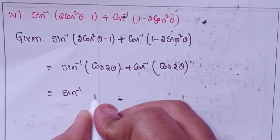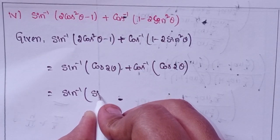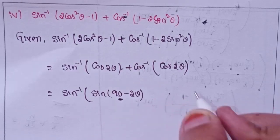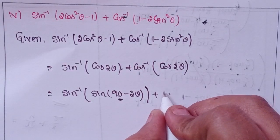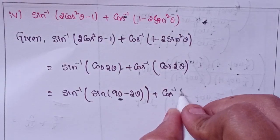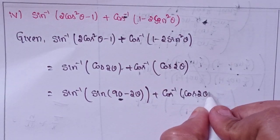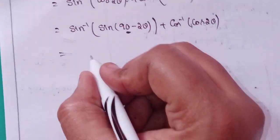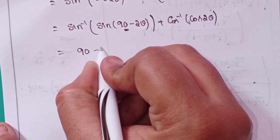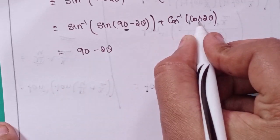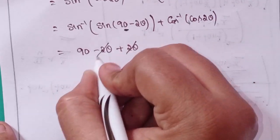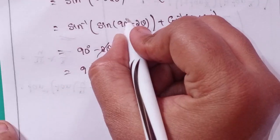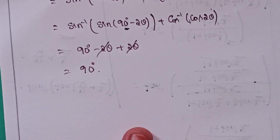Sin inverse of cos 2θ — can I write cos as sin of (90 minus 2θ)? So sin inverse of sin(90 minus 2θ) plus cos inverse of cos 2θ. Sin inverse and sin cancel, giving 90 minus 2θ. Cos inverse and cos cancel, giving plus 2θ. These two cancel, leaving 90 degrees as the solution. This is the fourth one.